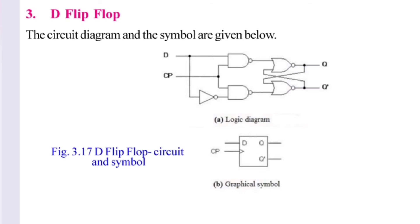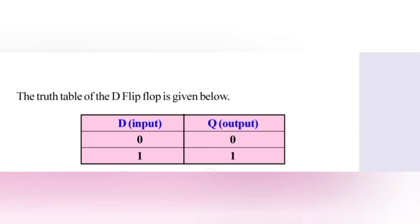D flip-flop means delay flip-flop. In the circuit, there is one NOT gate, two NAND gates, and two NOR gates. Looking at the truth table, when input D is 0 the output is 0, and when D is 1 the output is 1. In this D flip-flop, the output follows the input.